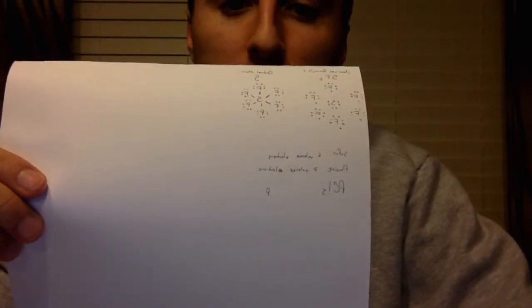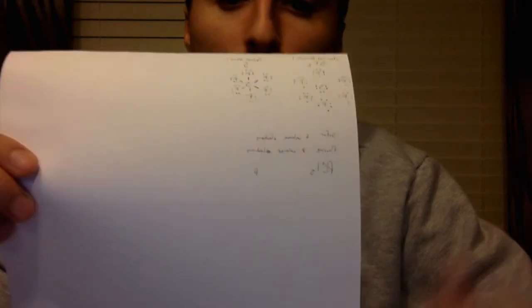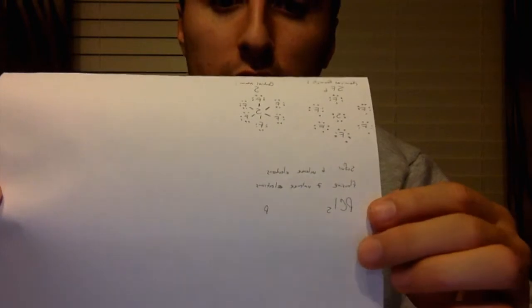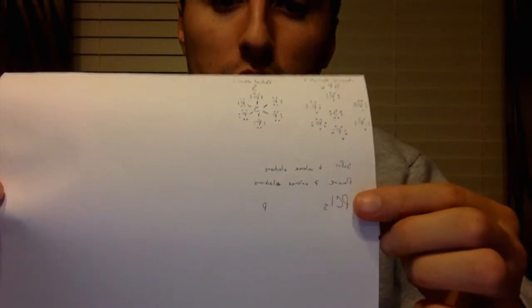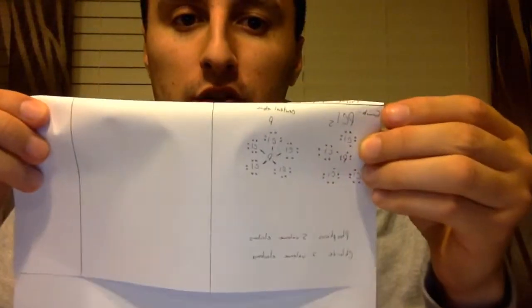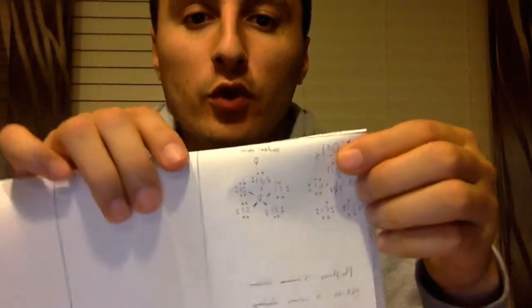Here we have phosphorus pentachloride, PCl5. I'm going to go ahead and show you what the dot diagram and structure look like for this chemical formula.